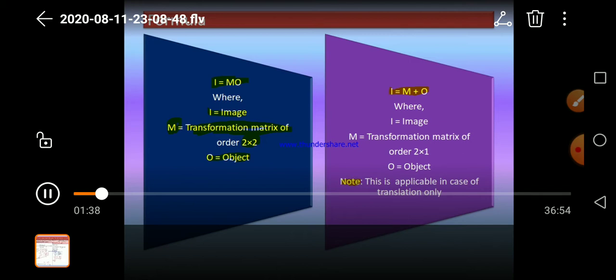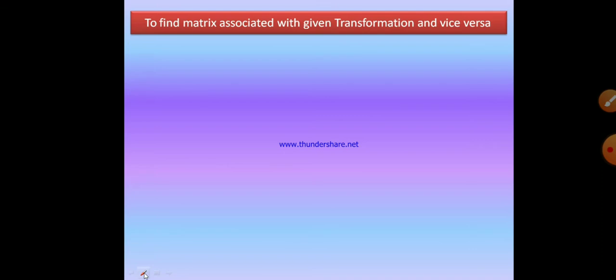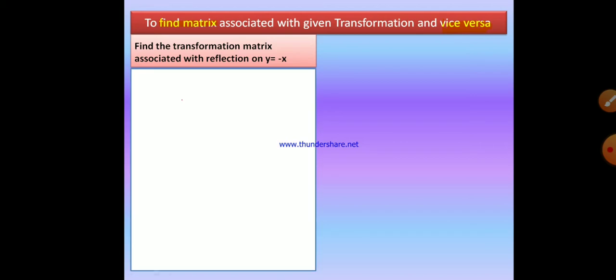In this chapter there are mainly two formulas: i equals to MO, and i equals to M plus O. The formula i equals to M plus O is only applicable in the case of translation. For reflection, rotation and enlargement we use the formula i equals to MO. So i, M and O have their usual meaning: i stands for image, M stands for transformation matrix, and O stands for object in matrix form.